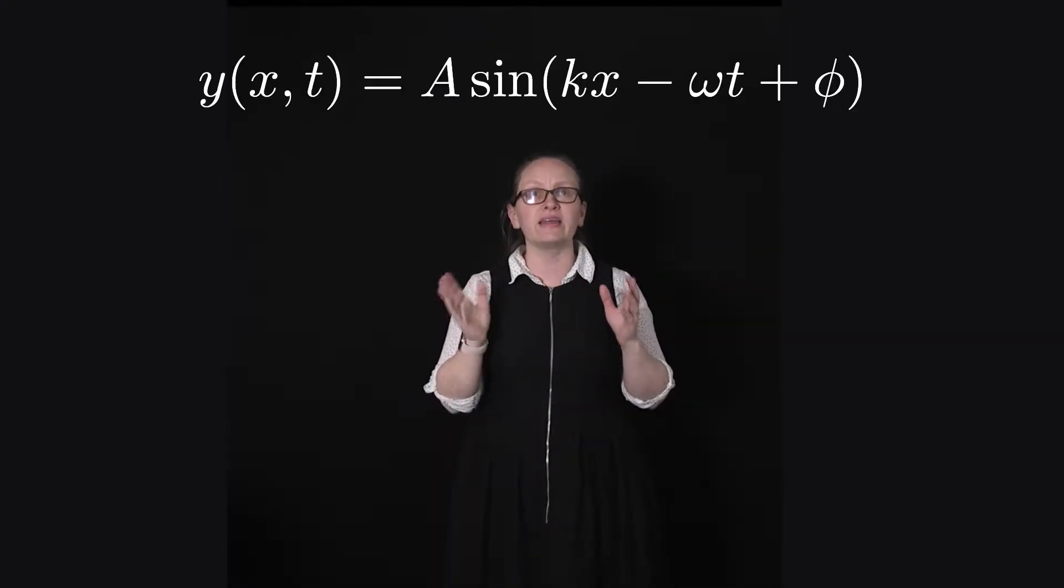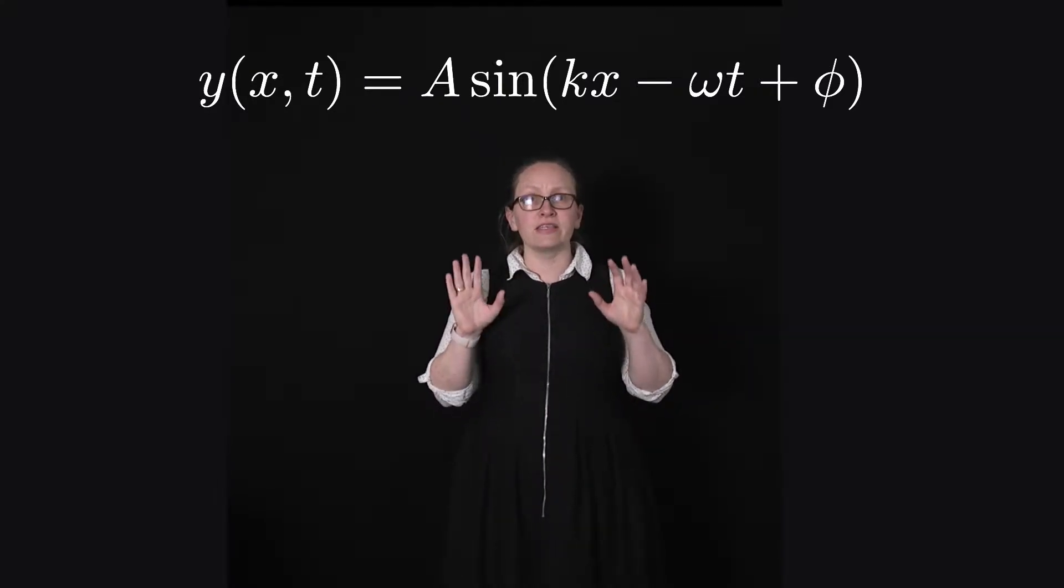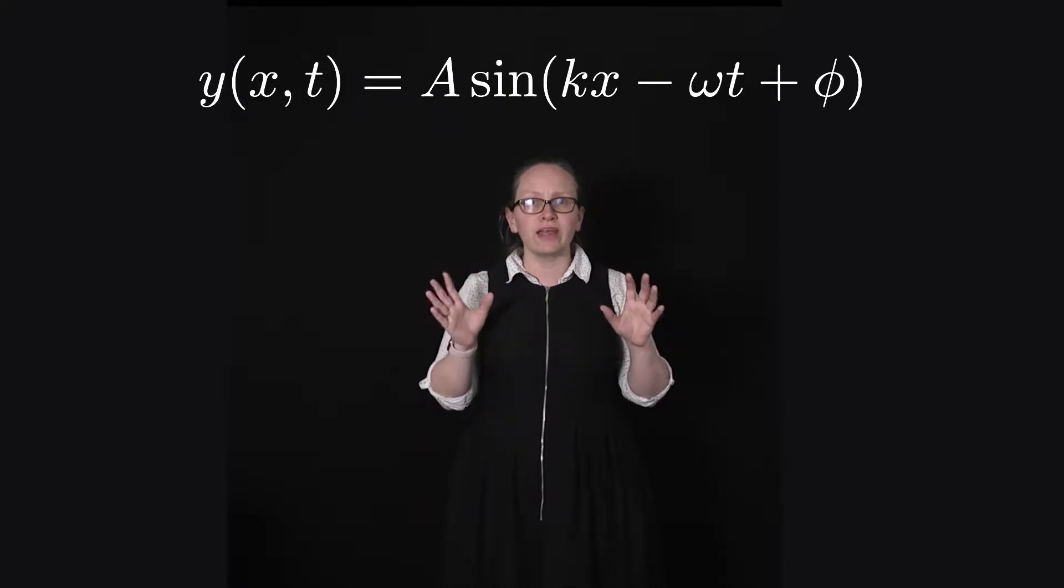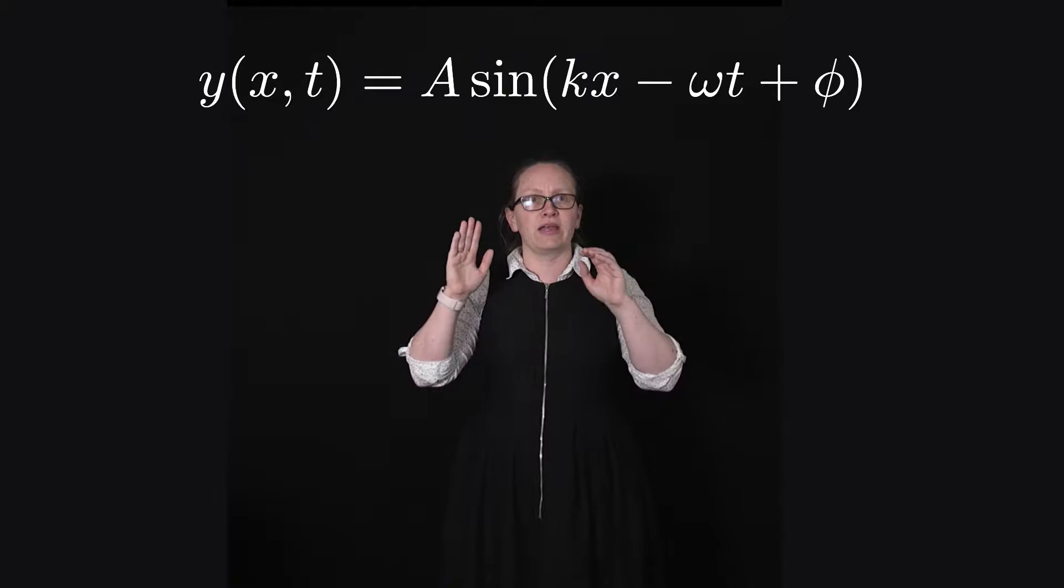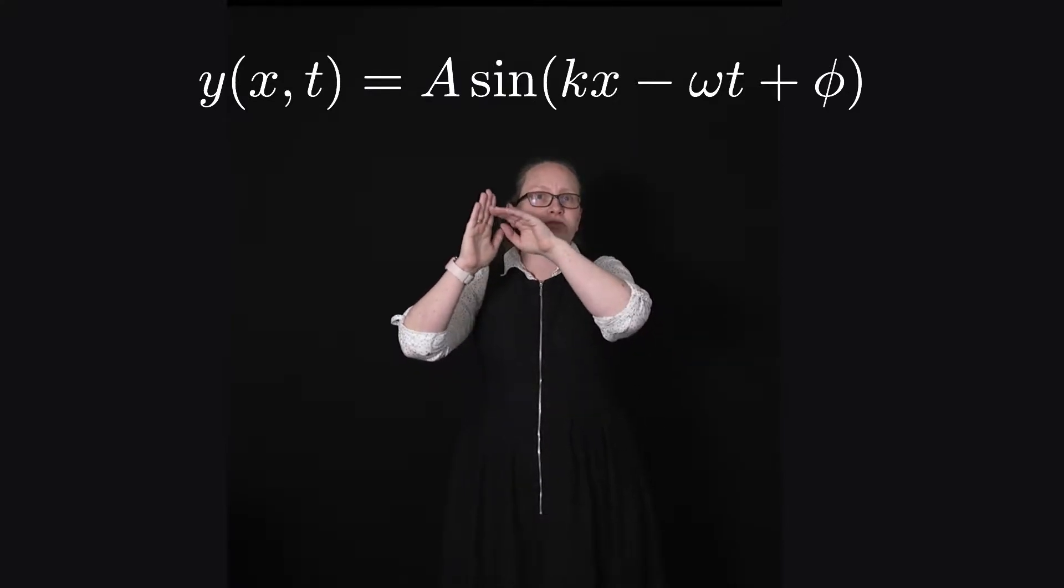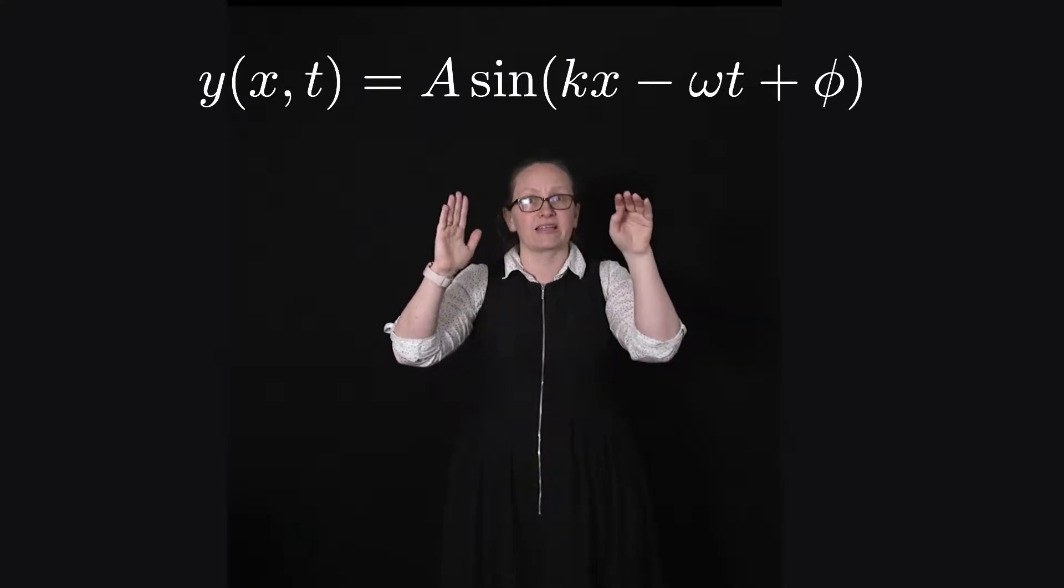The sinusoidal wave equation can be written as y equals A sine kx minus omega t plus phi. Now this is for a transverse wave because we're measuring the height y and we're looking at how that varies through time and along the x-axis.